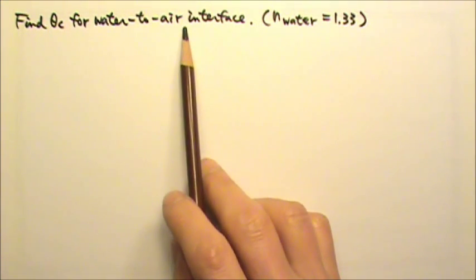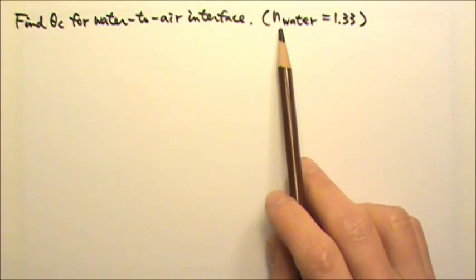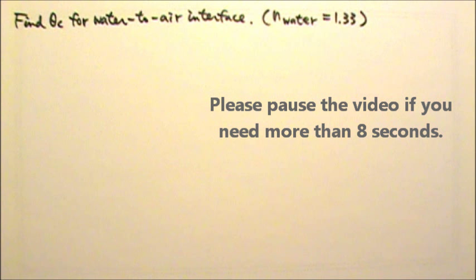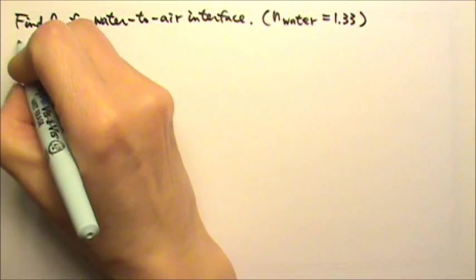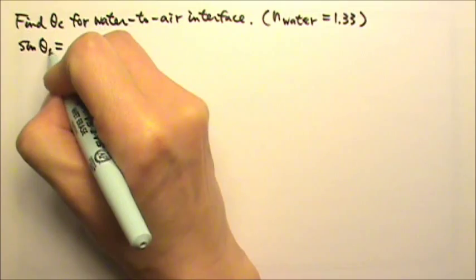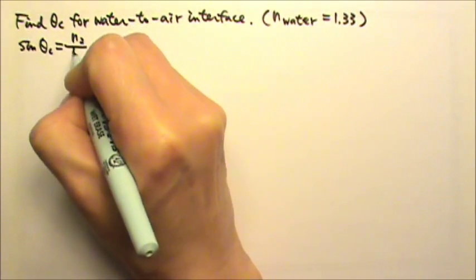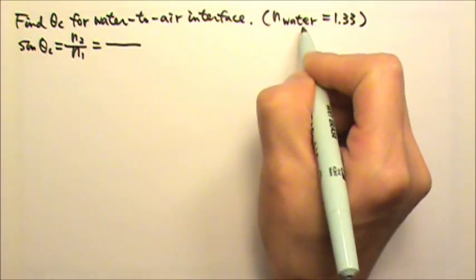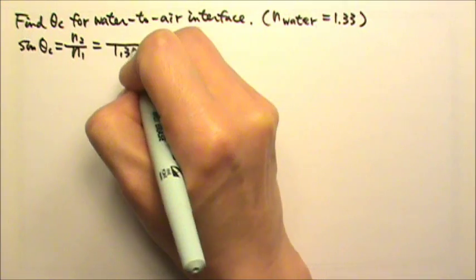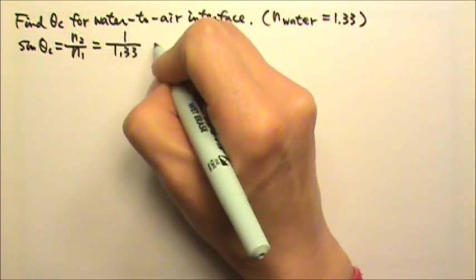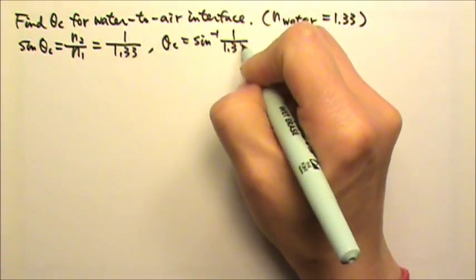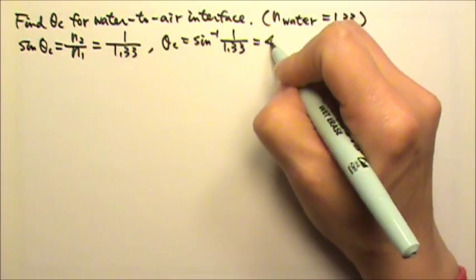Find the critical angle for water-to-air interface. The index of refraction of water is 1.33. Sine of the critical angle is n2 over n1. Light is going from water to air, so n1 is the index of refraction of water, and n2 is that of air. So the critical angle equals the inverse sine of 1 over 1.33, and we get 49 degrees.